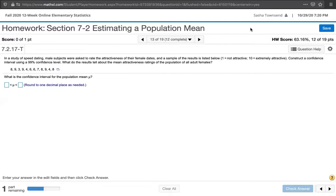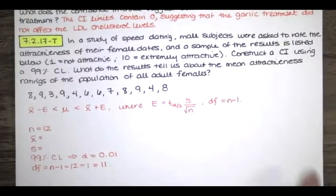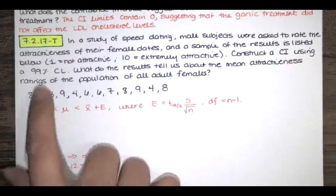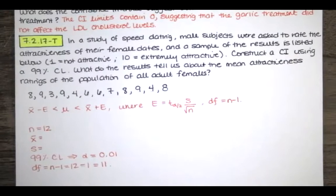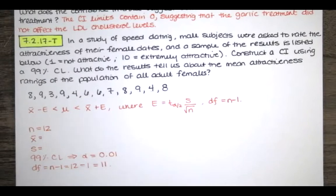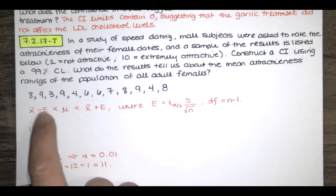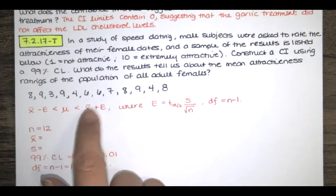In order to solve this, I'm going to show you my paper, but I'll also use Excel to compute the sample mean and the sample standard deviation. We're asked to construct a confidence interval using that 99% confidence level, and I've written down the formula for the confidence interval for a population mean. We know that the population mean is between the sample mean minus the error and the sample mean plus the error.